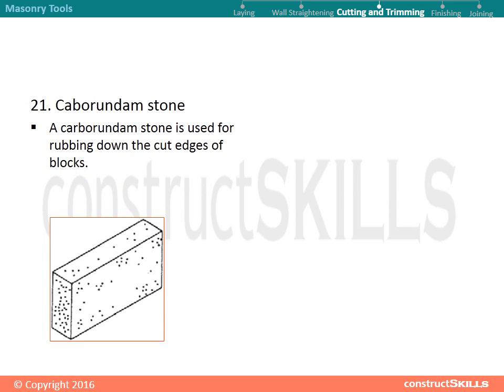Cutting and trimming tools: cabarundum stone. A cabarundum stone is used for rubbing down the cut edges of blocks.